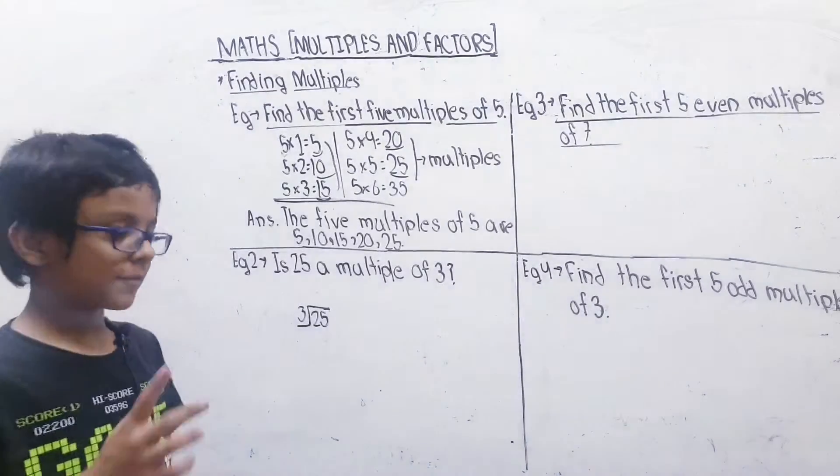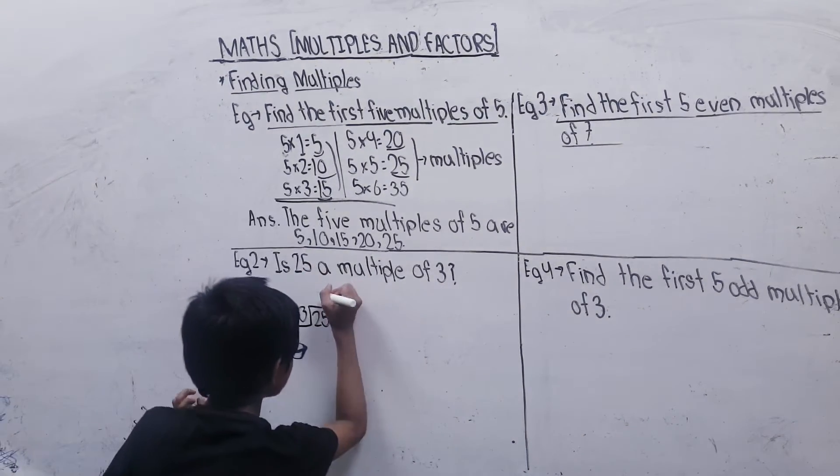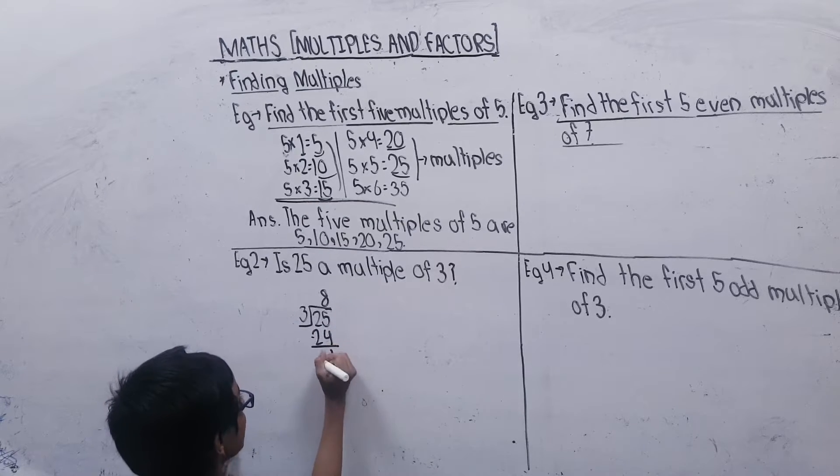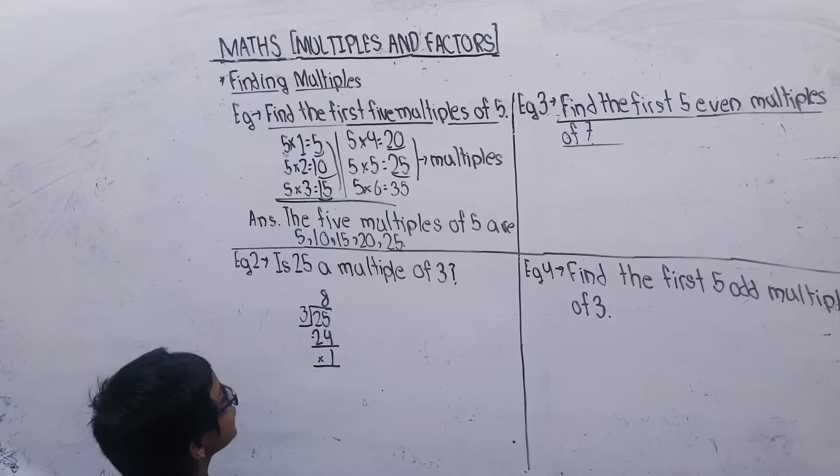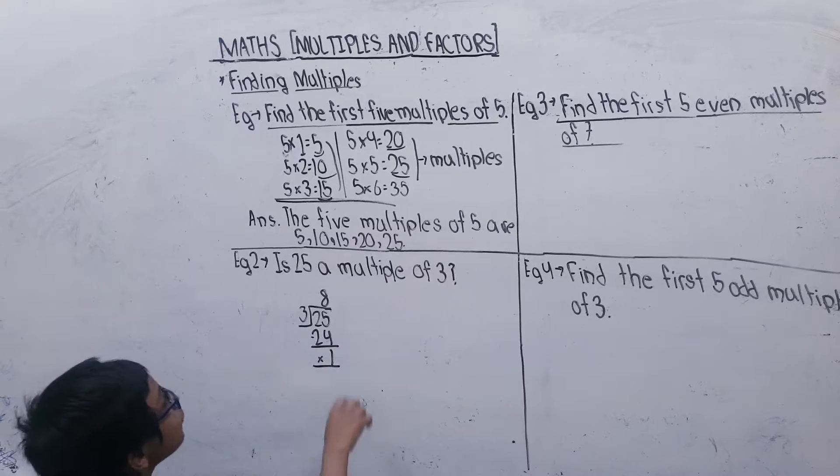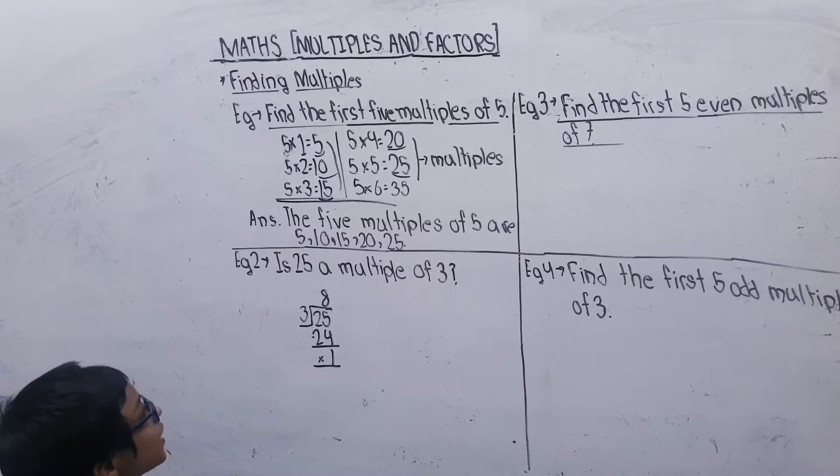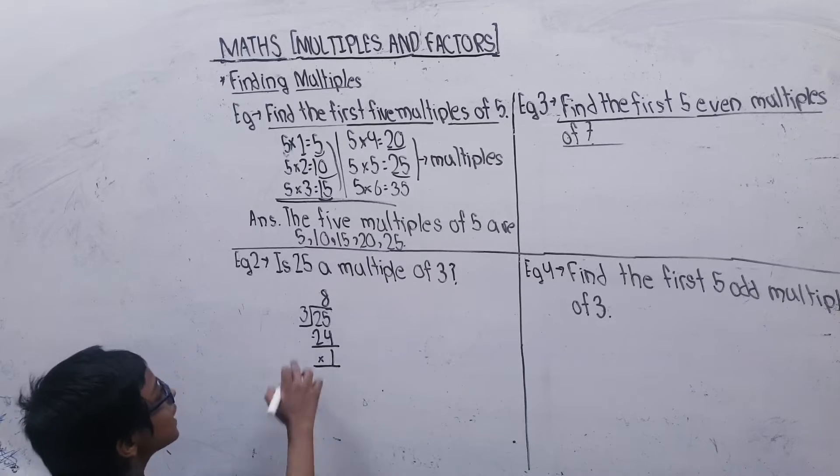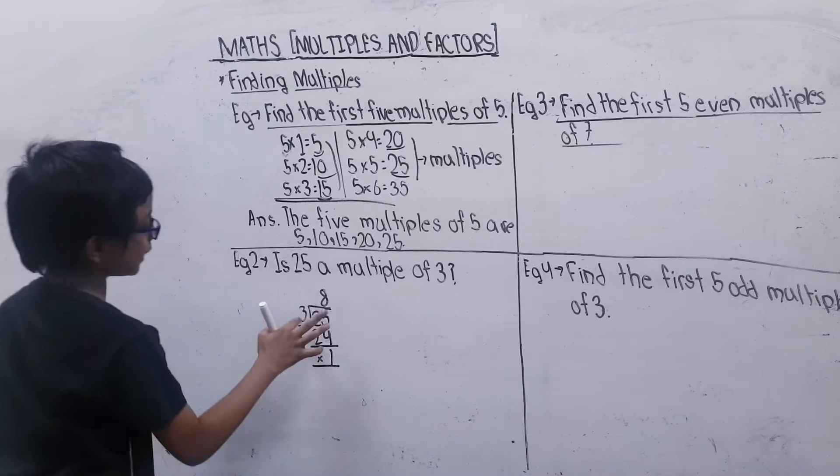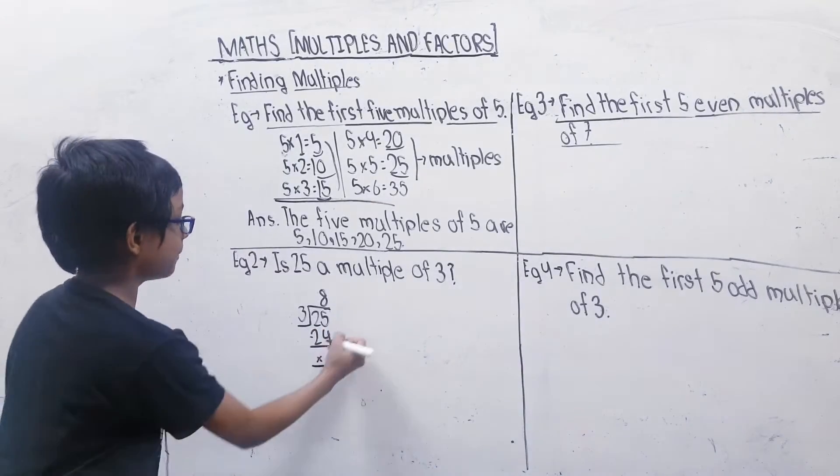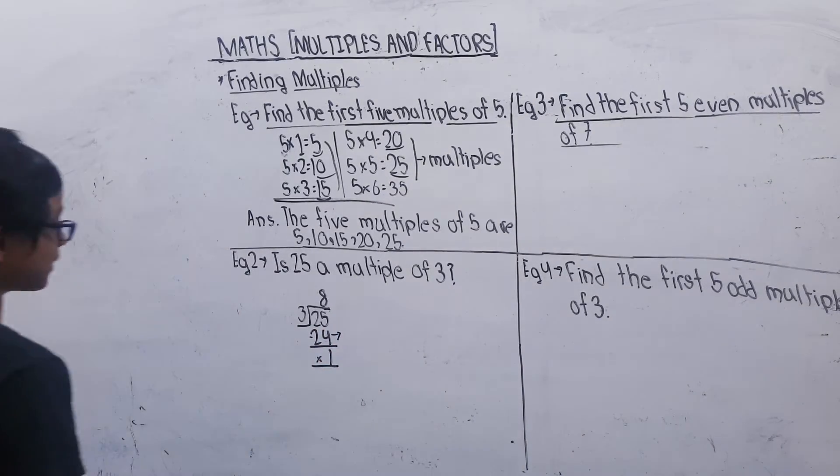So 3×8 is 24. 25 minus 24 equals 1, then answer is 1. Remainder is 1. So 25 is not a multiple of 3.